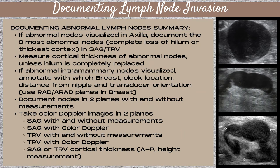Here's the summary of steps for documenting abnormal lymph nodes. If any abnormal nodes are visualized in the axilla, document the three most abnormal — those with either a complete loss of the fatty hilum or the thickest cortex. Do this in sagittal and transverse planes, and measure the cortical thickness of the abnormal nodes unless the hilum is completely replaced and can't be seen at all.